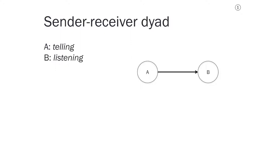We can then describe a dyad, like the one pictured here, as one where person A talks to person B. So person A is the one doing the telling, and person B is the one doing the listening.